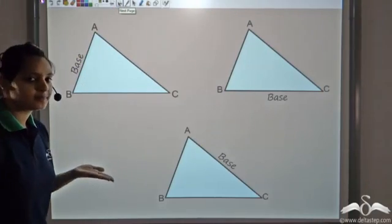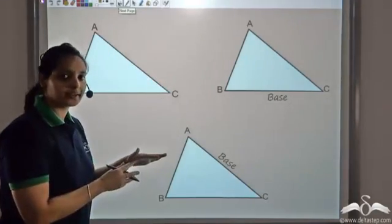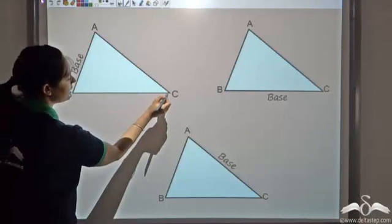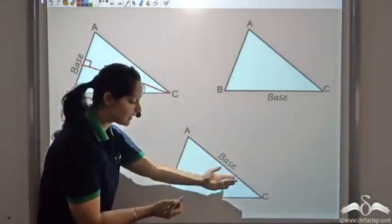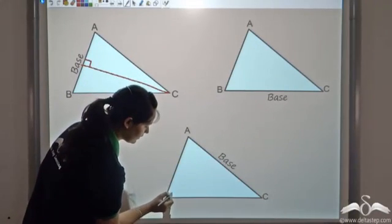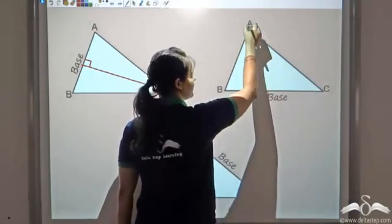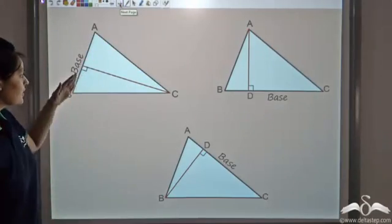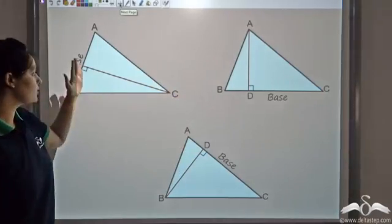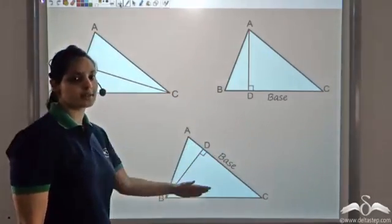You don't have to rotate the triangle to find the base. If AB is the base, the opposite vertex is C — just draw a perpendicular from C to AB. If AC is the base, draw a perpendicular from B. Any side can be taken as the base, and the perpendicular from the opposite vertex gives the altitude.